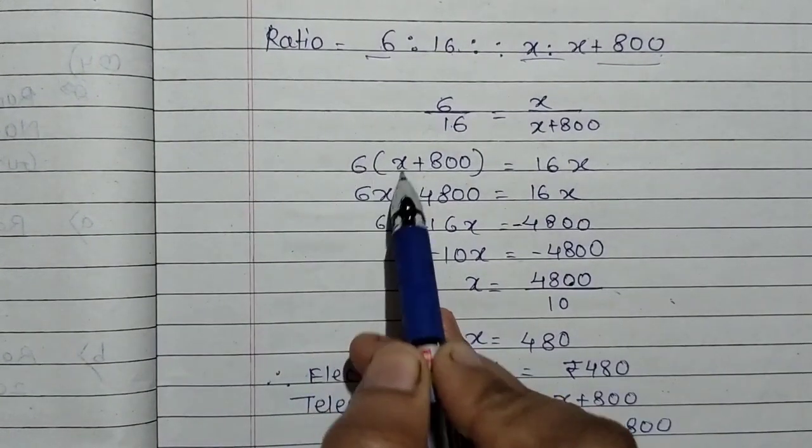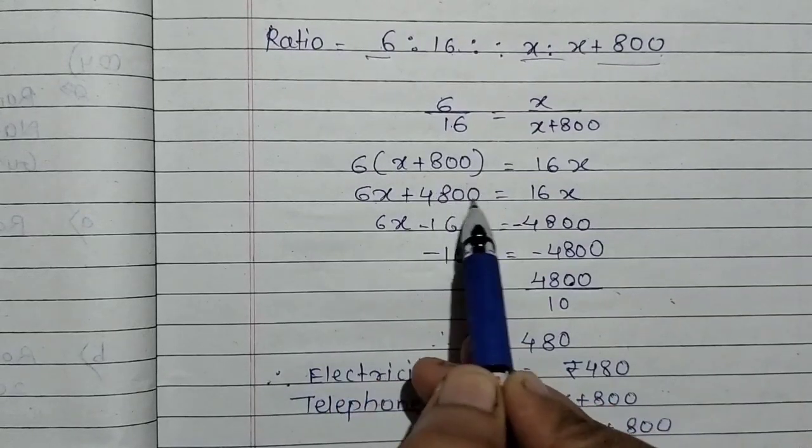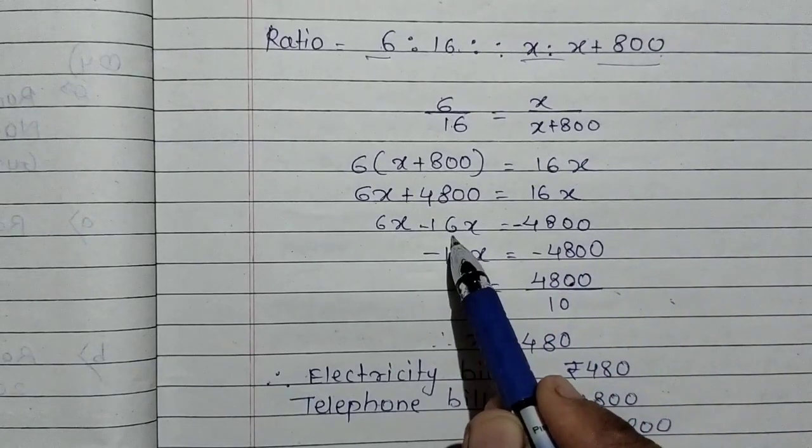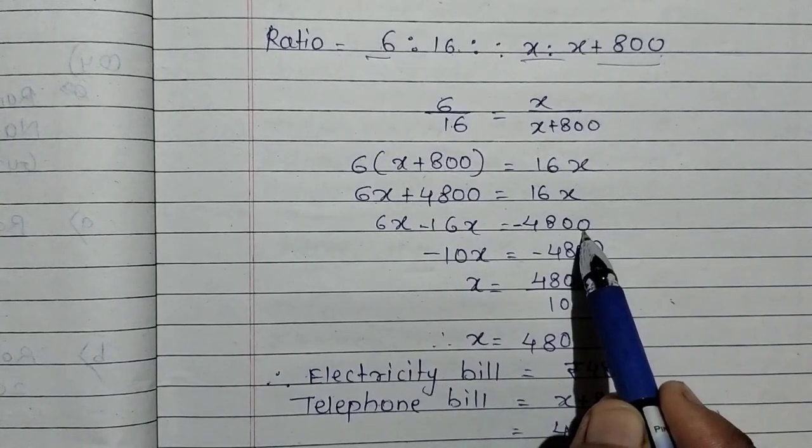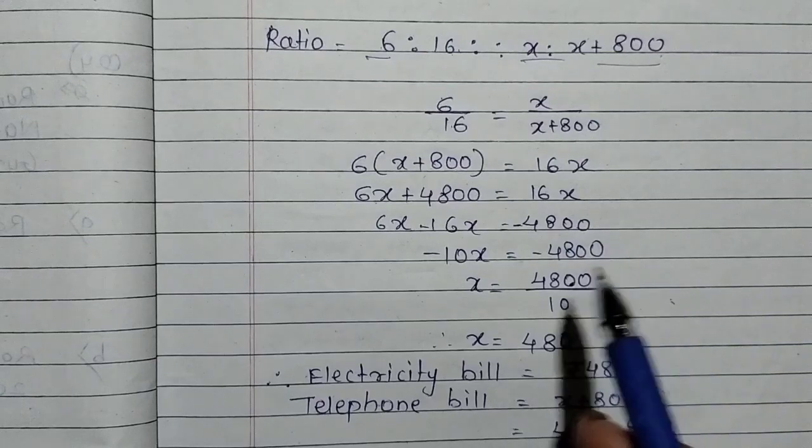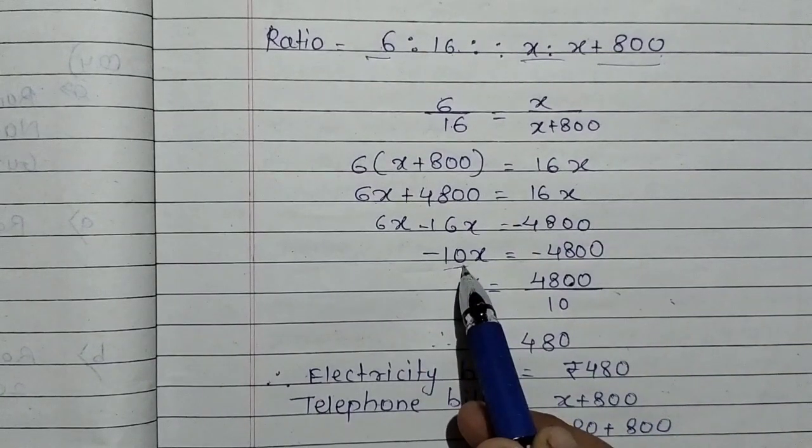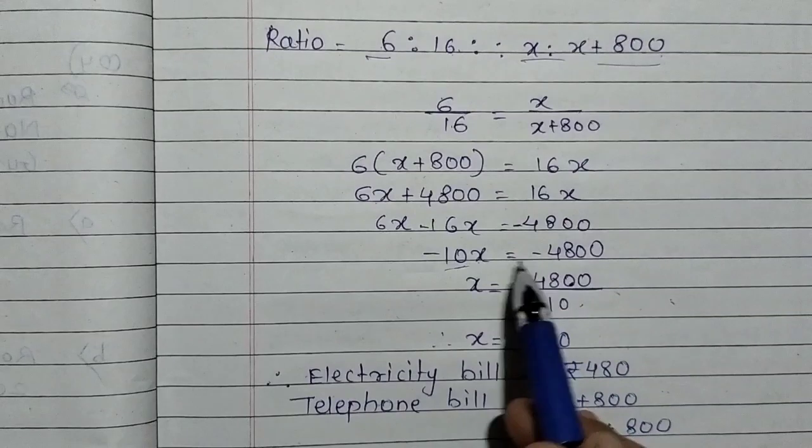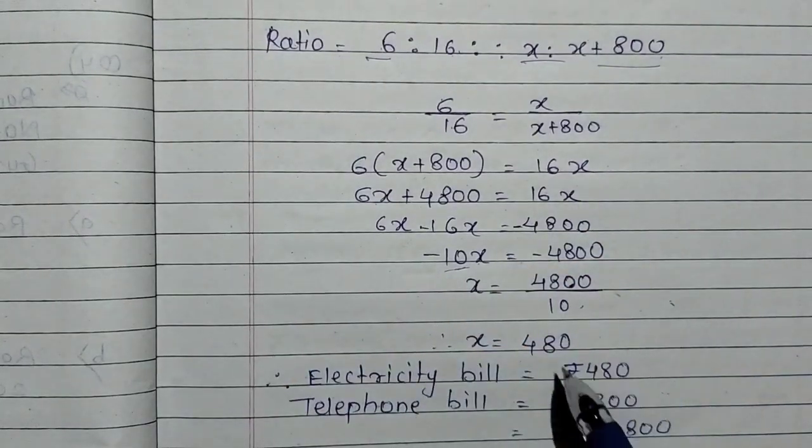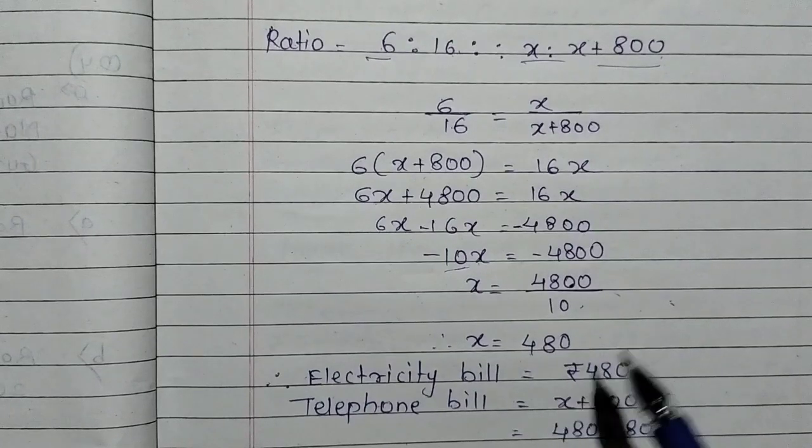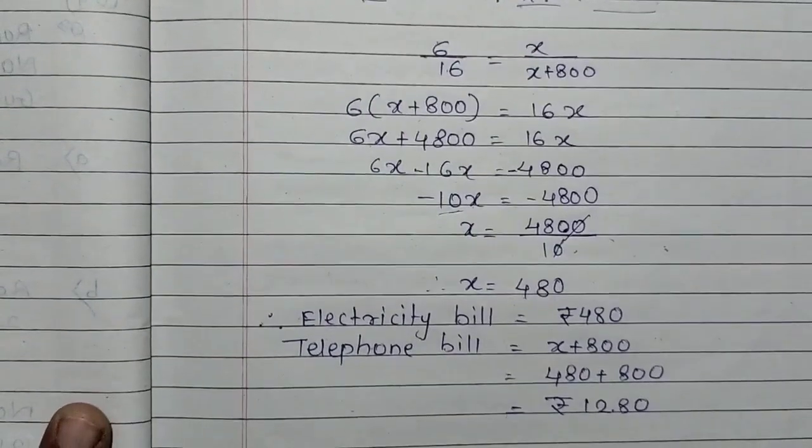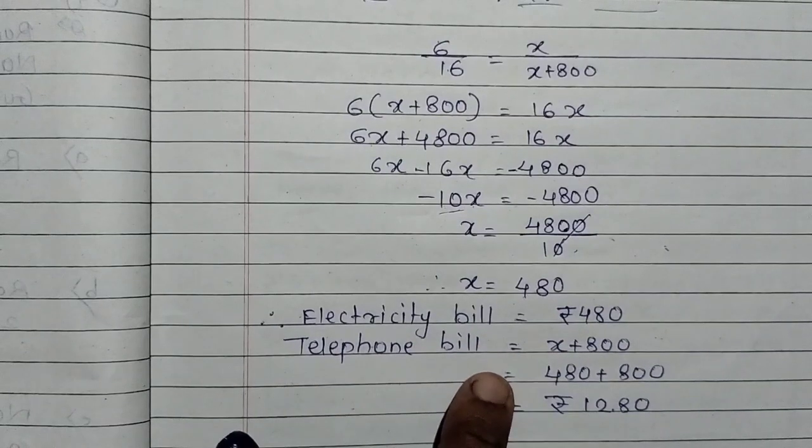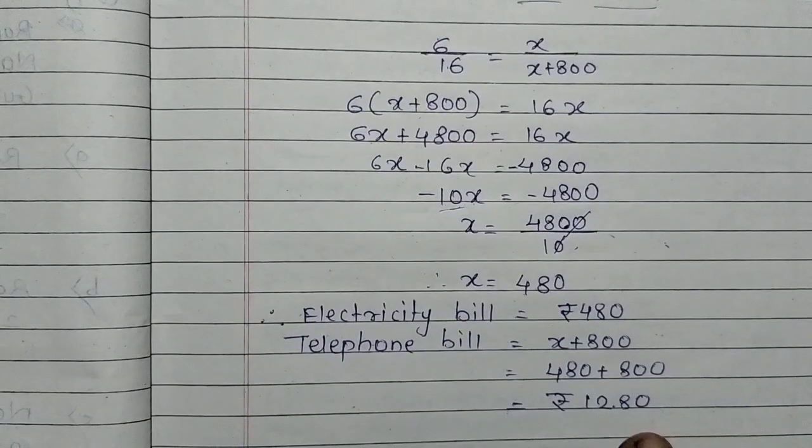So we cross multiply. 6 into x is 6x, 6 into 800 is 4800. And on the other side 16x. So 16x will go to the left side, it becomes minus 16x. And 4800 will go to the right side, it becomes minus 4800. So we get minus 10x equals minus 4800. Now 10 is multiplied with x, so it goes to the other side and becomes divide. When both numbers are negative, we consider them positive. So divide and the answer is 480. So electricity bill is rupees 480. Telephone bill will be 480 plus 800, which is 1280.